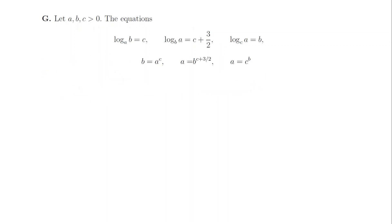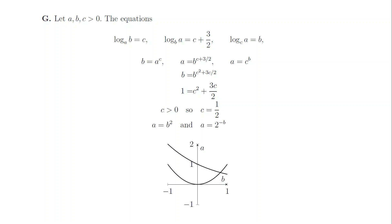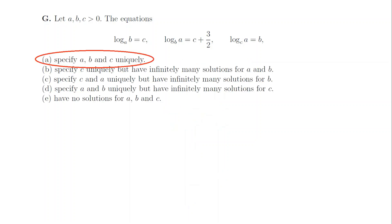1g. Get rid of all the logarithms and try to solve these equations. If we raise the middle one to the power of c, we get b on the left, and b to a quadratic in c on the right-hand side. Because b isn't 1 (for these logarithms to make sense), we must have the quadratic equal to 1. Solve this for positive c to find that c is a half, and the other equations become a equals b squared and a equals 2 to the minus b. A quick sketch shows there's a unique solution, so the answer is a.